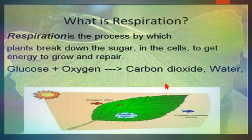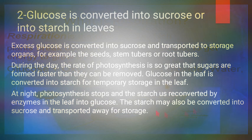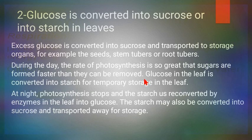The second use of glucose is that it can be converted into other forms of carbohydrate. Sucrose is a disaccharide made up of glucose and fructose — both monosaccharides — combined together. Starch can also be formed from glucose; it is a polysaccharide made up of a long chain of glucose molecules.